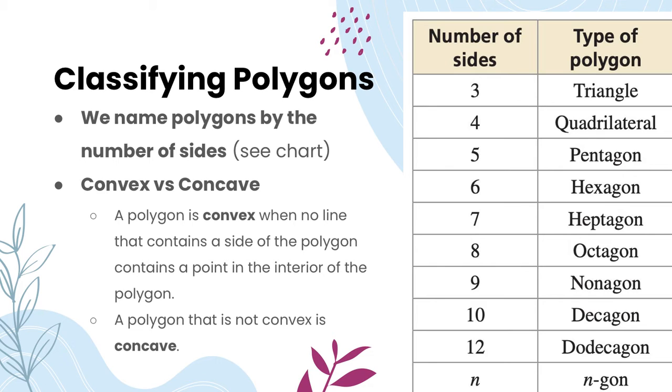One of the things we want to look at is being able to classify polygons. We name polygons by the number of sides. If we have a polygon with three sides, we call it a triangle.